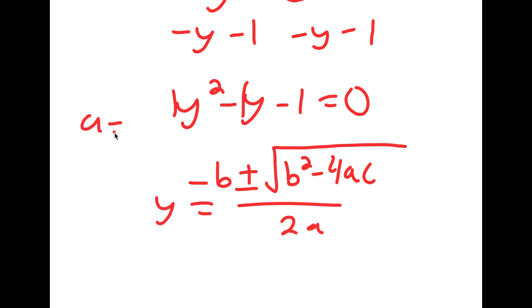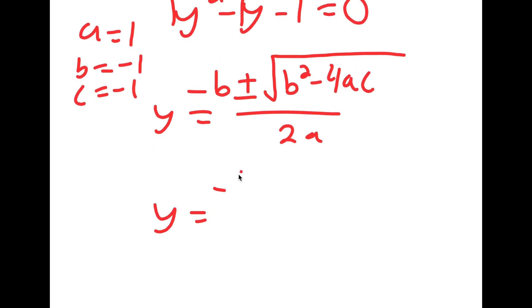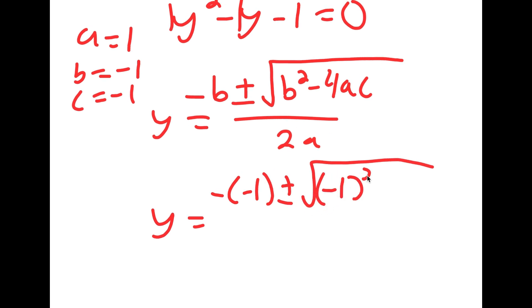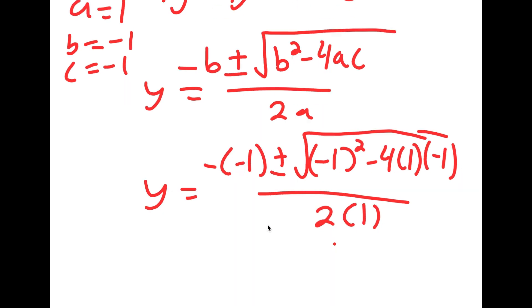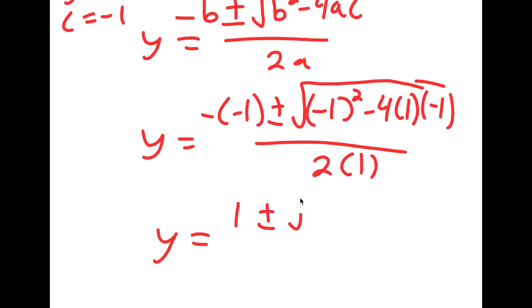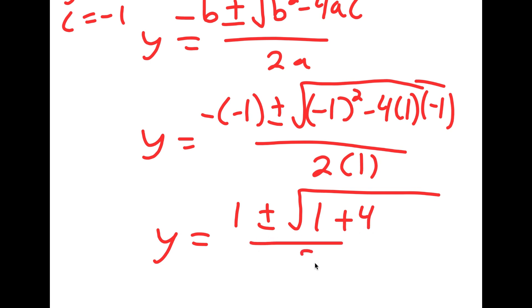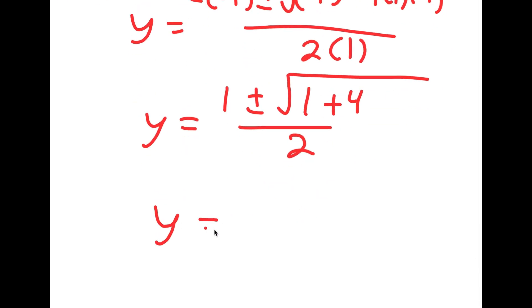To solve this I'm going to use the quadratic formula: negative b plus or minus the square root of b squared minus 4ac all over 2a. In this case a is 1, b is negative 1, and c is negative 1. So I get y equals negative of negative 1 plus or minus the square root of negative 1 squared minus 4 times 1 times negative 1, all over 2 times 1. This equals 1 plus or minus the square root of 1 plus 4, all over 2.